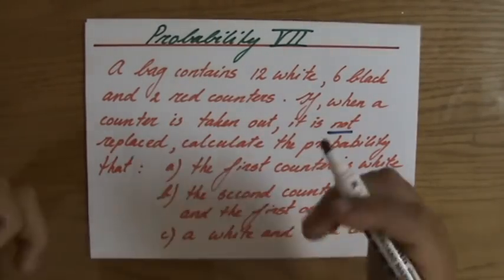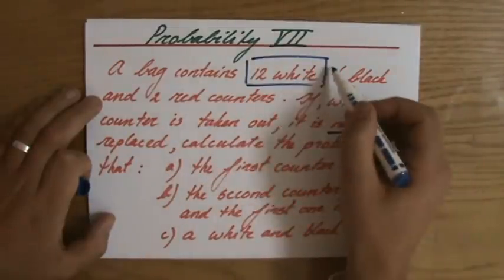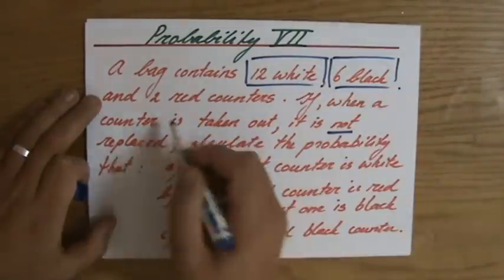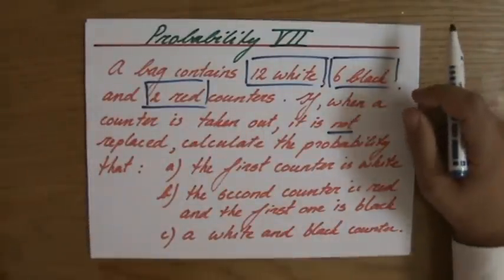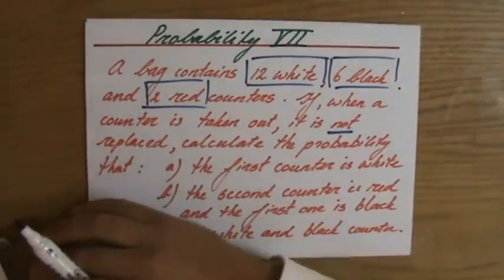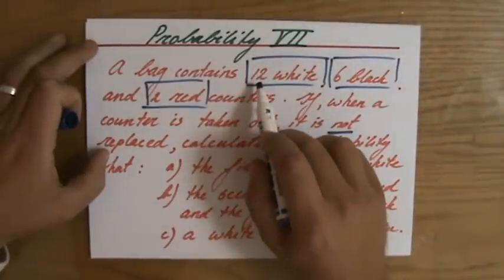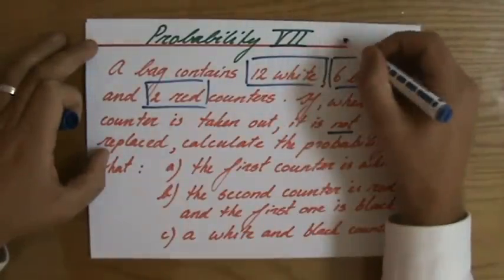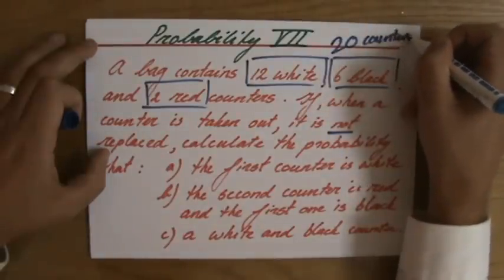First of all, I have 12 white counters, 6 black ones, and 2 red ones. I just put a little rectangle around that. And I know already, it's going to be important to know how many counters are in this bag. So I'm just going to do the addition, 12, 18, so 20. I'm going to put it here, so I have 20 counters in total.